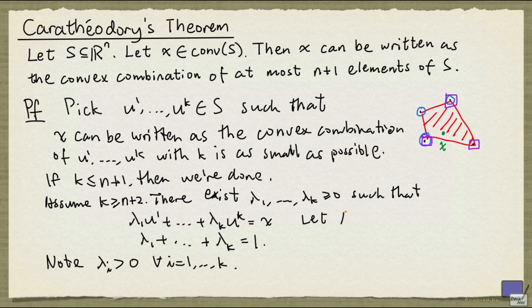We are now going to let A denote the following matrix. So the columns are 1u₁ all the way to 1uₖ. So this matrix A is going to have n+1 rows, where the top row will consist of all 1s. And because k is at least n+2, the nullity of A is at least 1.